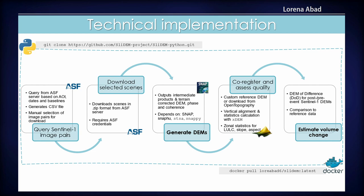We query from the Alaska Facility server, use SNAP, and use information from Open Topography to get reference data for co-registration and quality assessment. The volume change is computed as a DEM of difference between the two points in time. Everything is implemented with Python using the SNAP API. You can clone the repository and pull the Docker image to run this workflow.